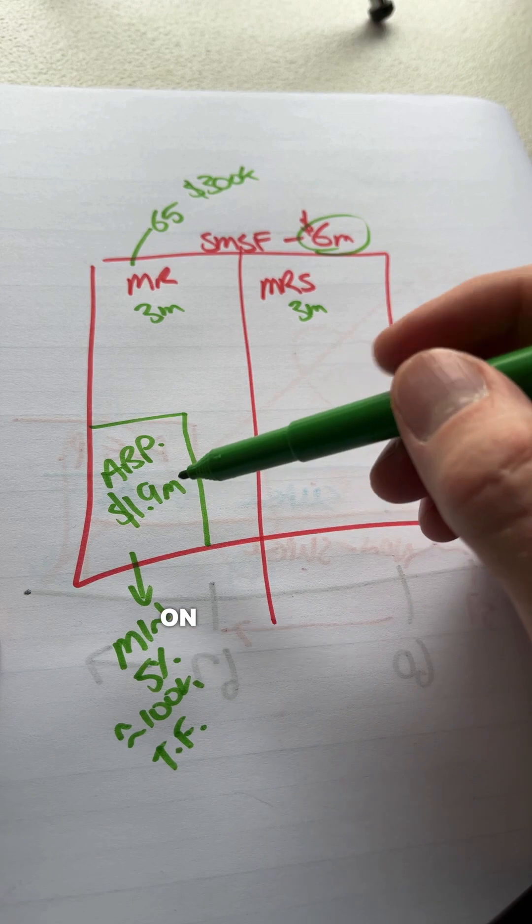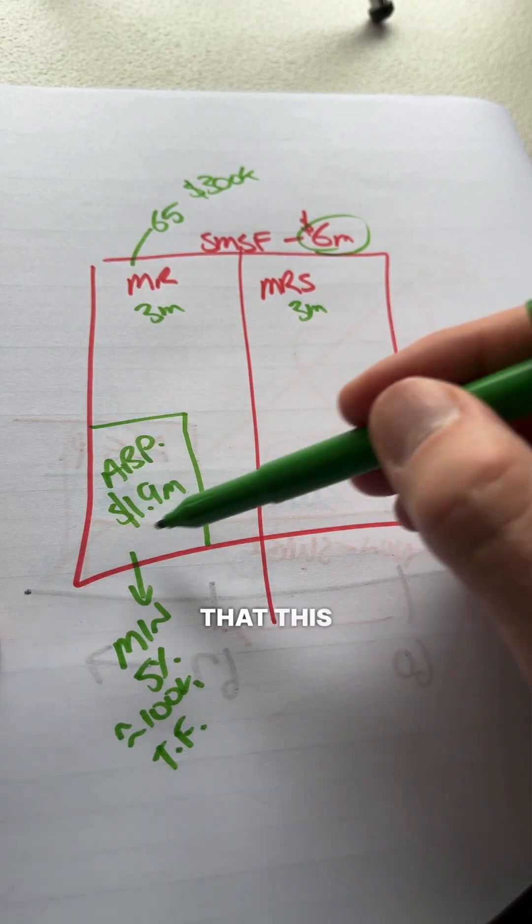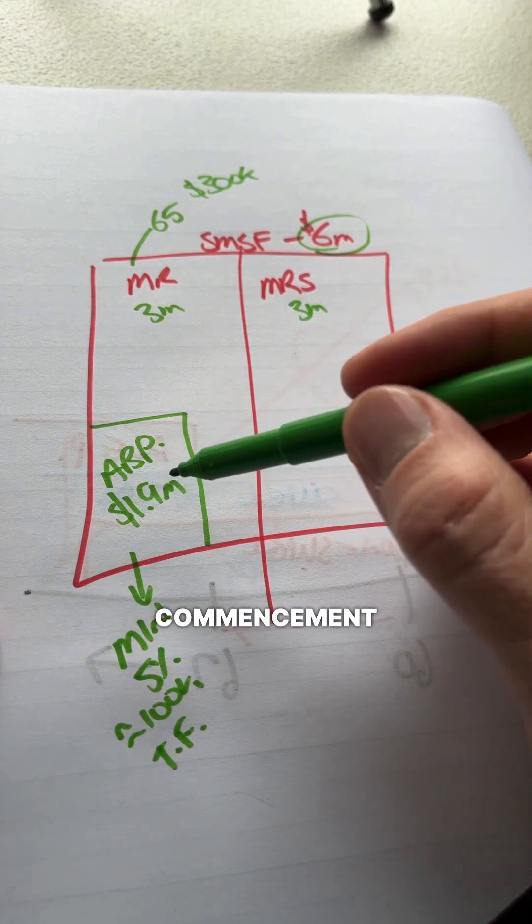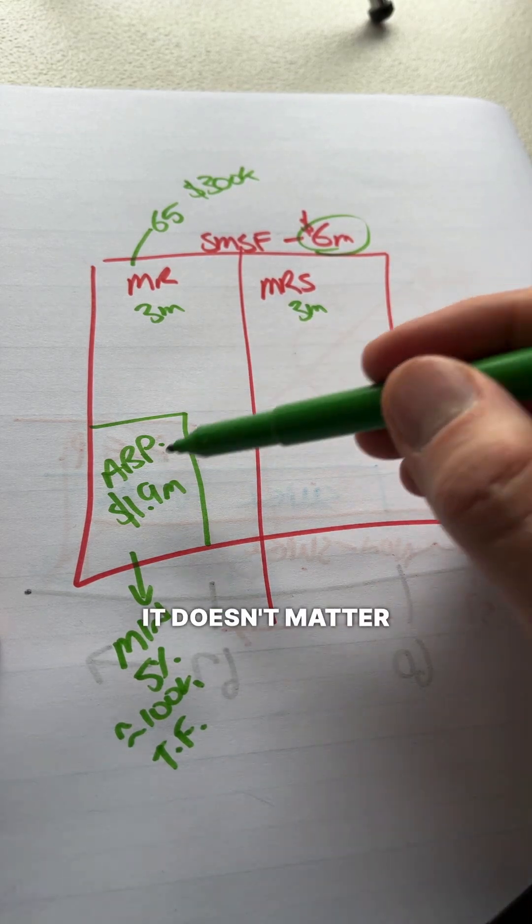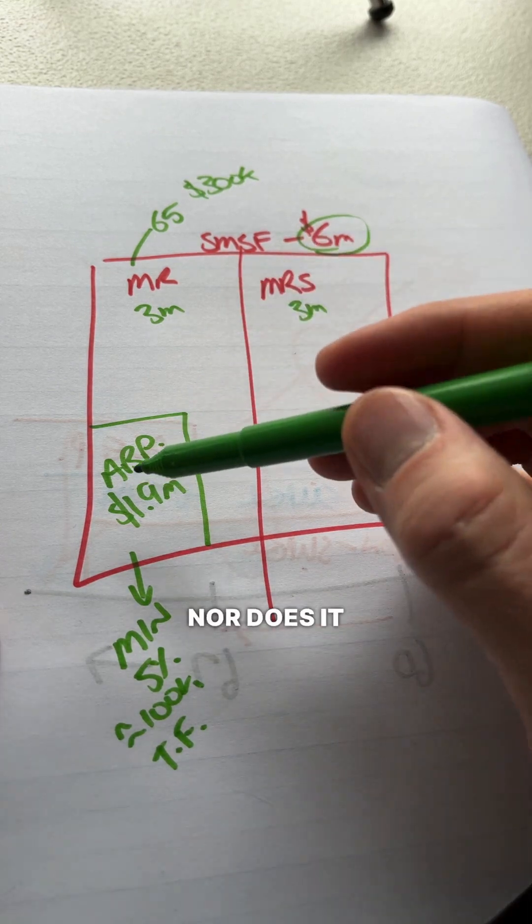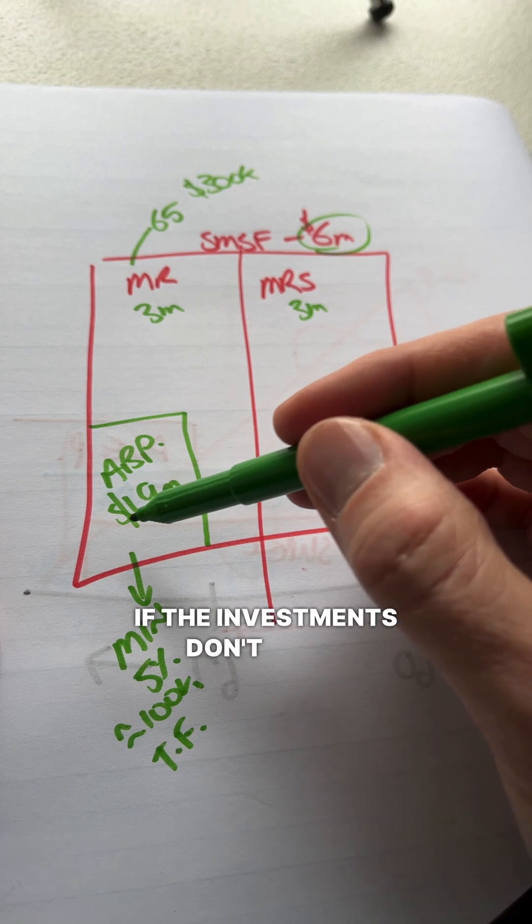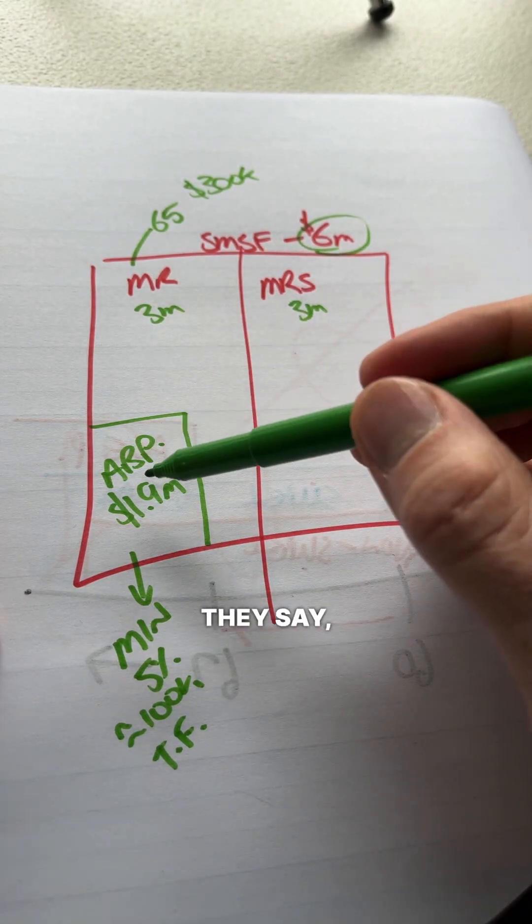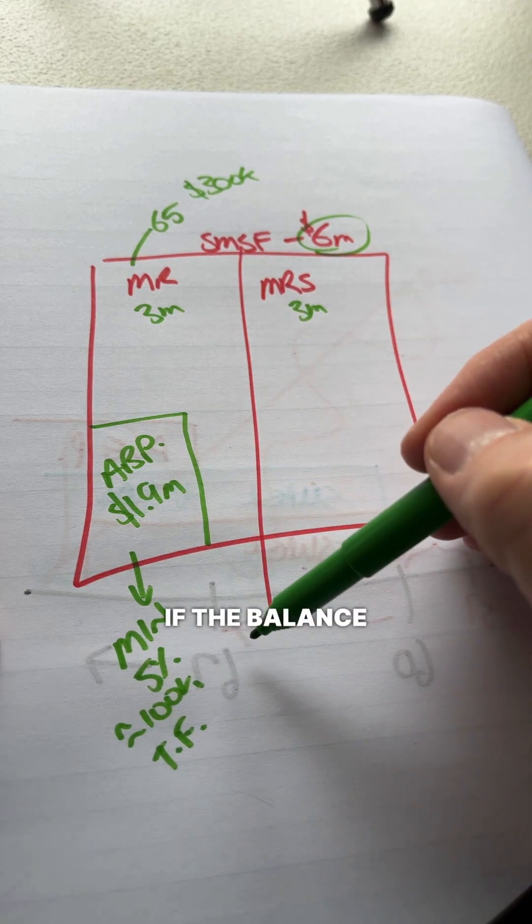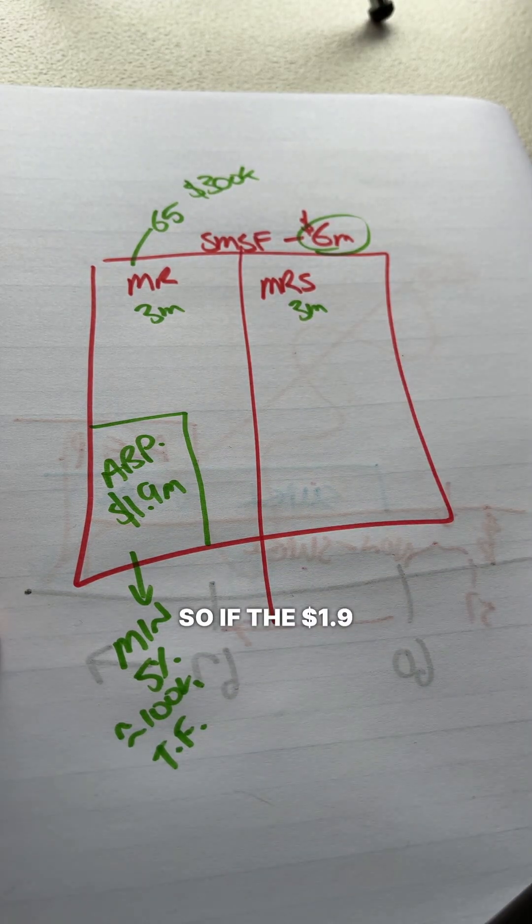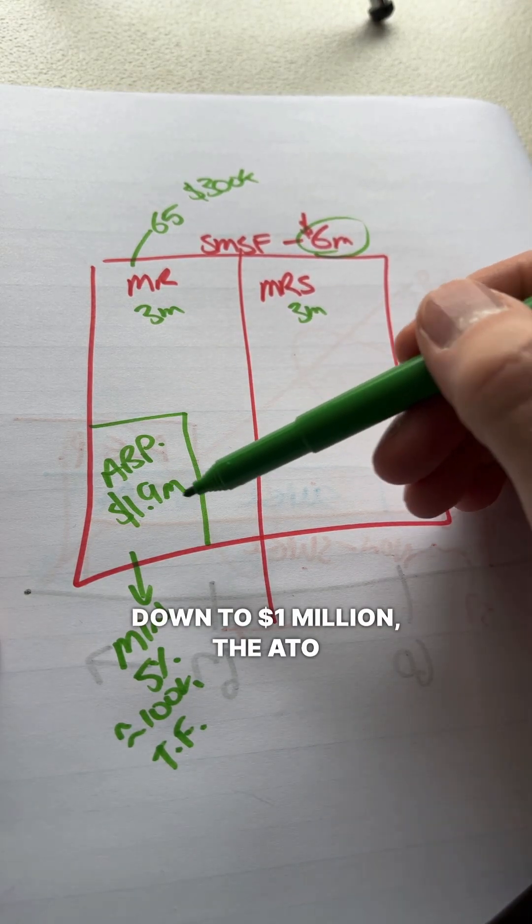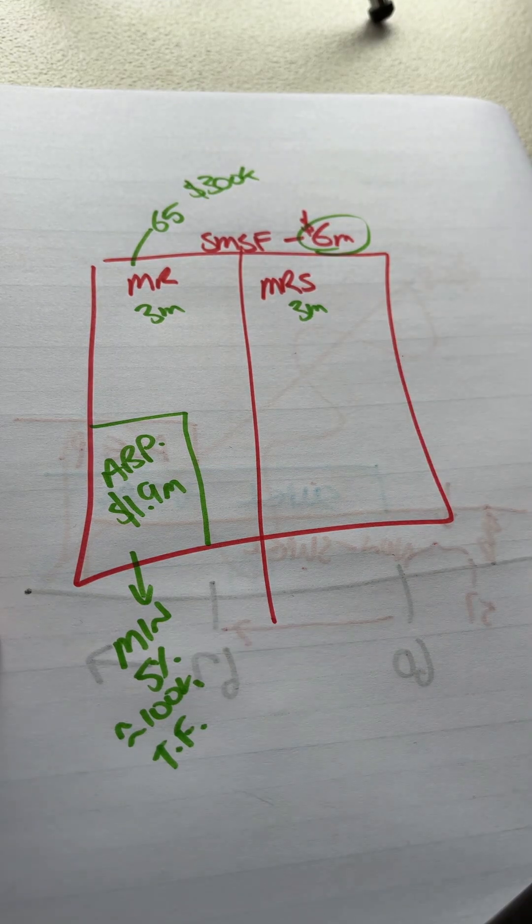Now, as I said earlier on in the video, the only time that this $1.9 million is measured against the transfer balance cap is on the commencement of the pension. It doesn't matter if this balance continues to grow to $2 to $2.5 million and beyond, nor does it also matter if the investments don't do so well and it goes down. So the ATO doesn't care. They say, well, we're not going to count the balance as it goes up. We're not going to give you any concessions if the balance goes down. So if the $1.9 million balance, the investments perform really poorly, and they go down to $1 million, the ATO nicely says, bad luck.